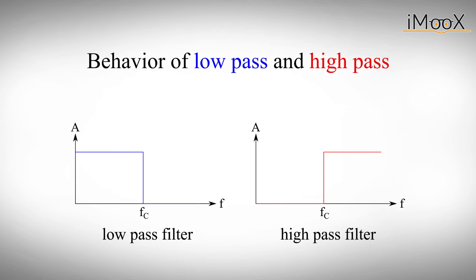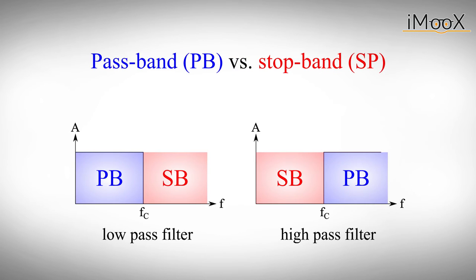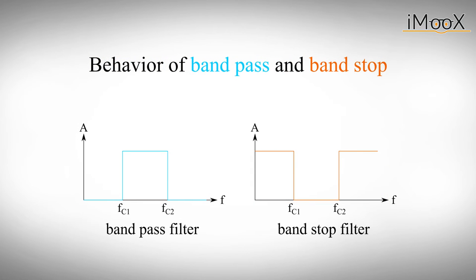We call those areas where AC signals can pass through the pass band and those where AC signals are stopped the stop band. We can also build combinations of low pass and high pass to get two more types of filters: the band pass and the band stop filter. These types simply have two corner frequencies, between which lies the pass band or the stop band respectively.